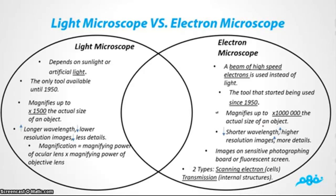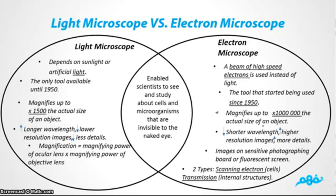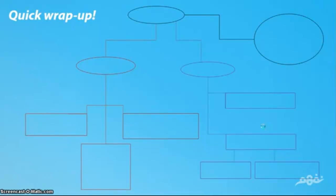There are two types of electron microscopes: the scanning electron microscope, used to observe cells, and the transmission electron microscope, used to see the internal parts of cells — what's inside them. Both enable scientists to see smaller things inside living organisms that we cannot see with our own eyes.